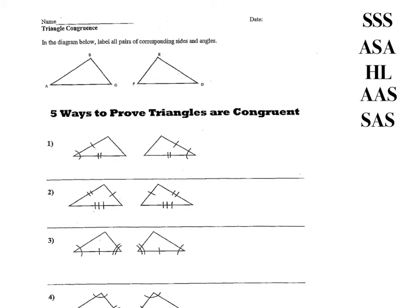The third one, HL, stands for hypotenuse leg. The fourth one is angle, angle, side — AAS. And then the last one, SAS, stands for side, angle, side. Let's take a look at the first example.